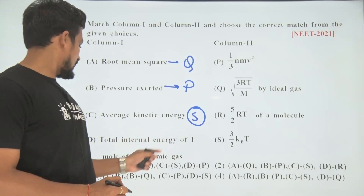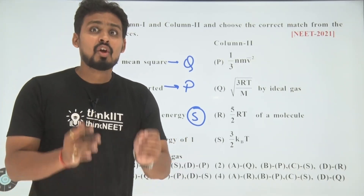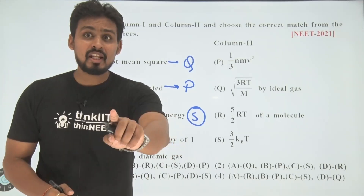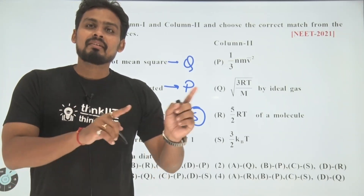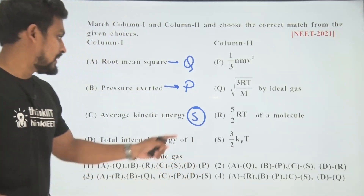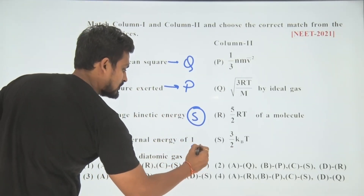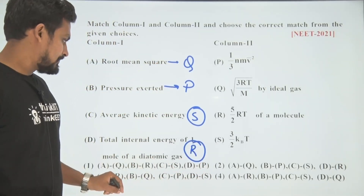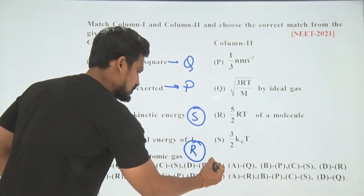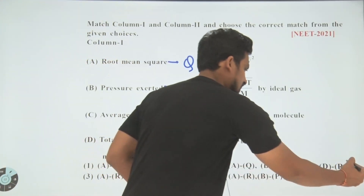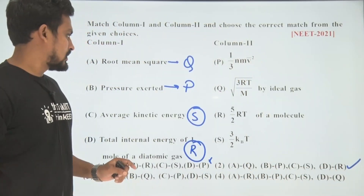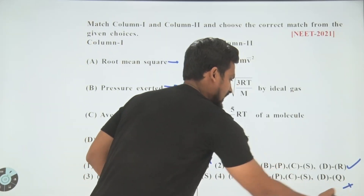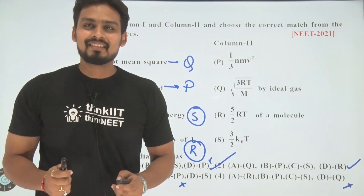Average kinetic energy of a single molecule equals (3/2)kT — this maps to S. Total internal energy of one mole of a diatomic gas: degree of freedom is 5, so it equals (5/2)RT — this maps to R. The correct mapping is Q, P, S, R. Option A is wrong, option 2 is correct, options 3 and 4 are wrong. The answer is option 2. Thank you.